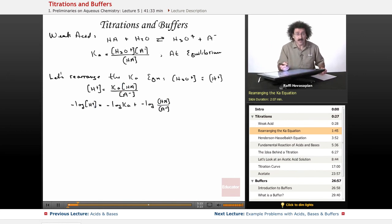Well, the negative logarithm is the definition of pH. So this becomes pH equals pKa minus the log of HA over A minus. In other words, the acid form over the conjugate base form.